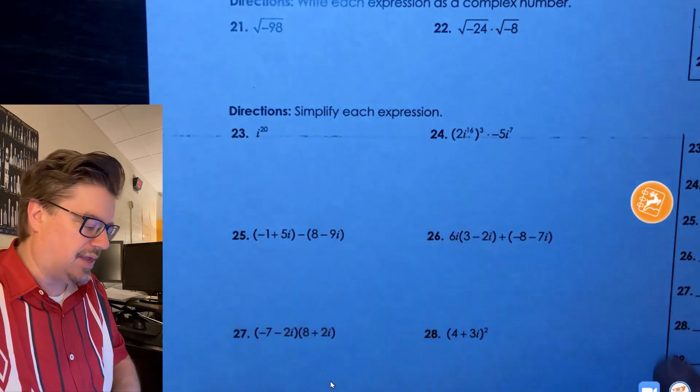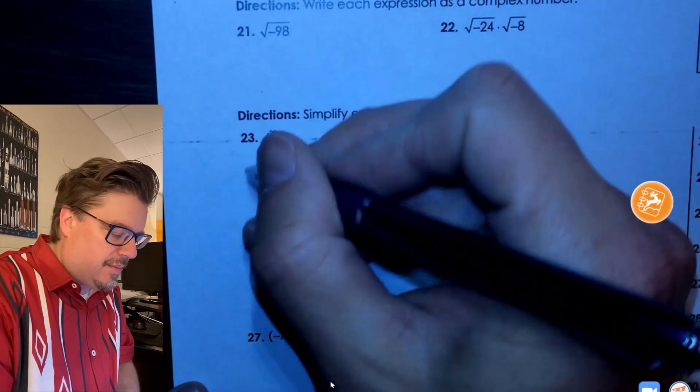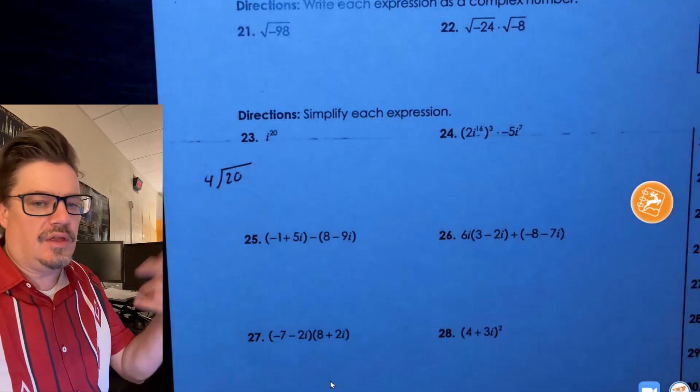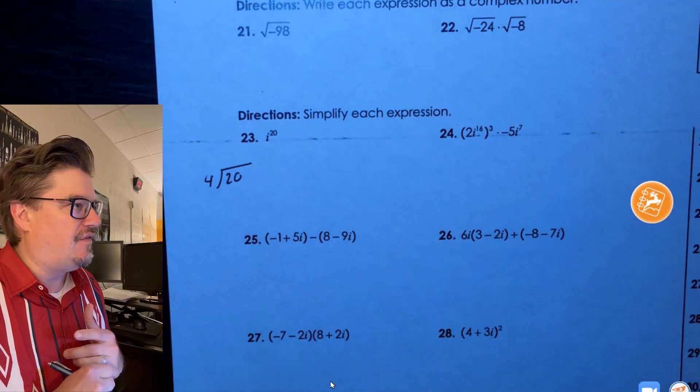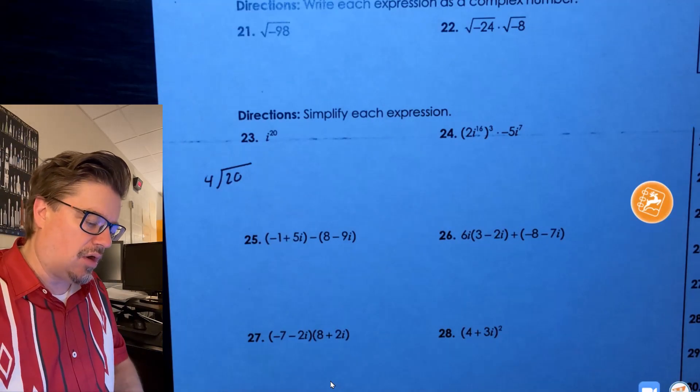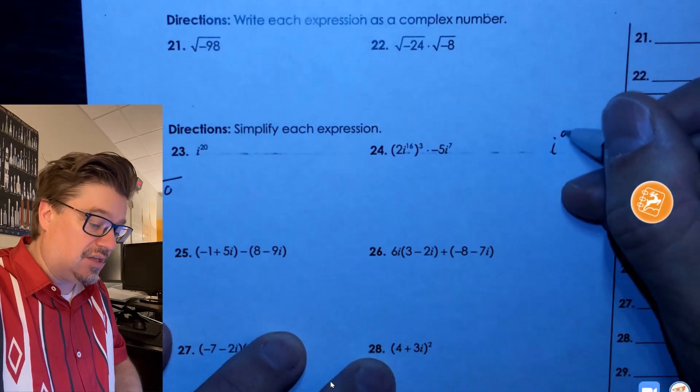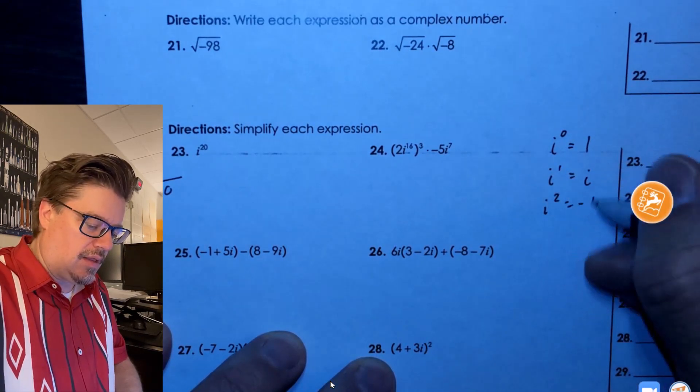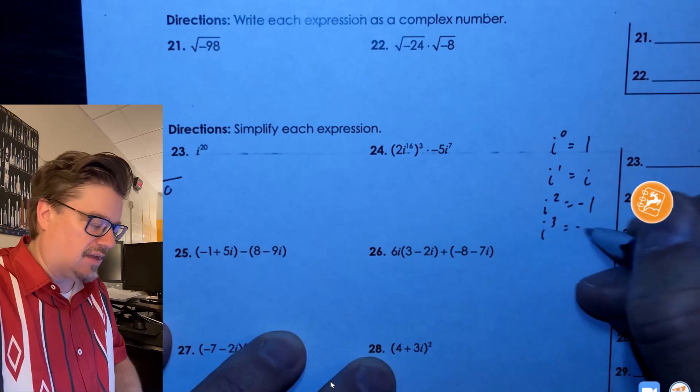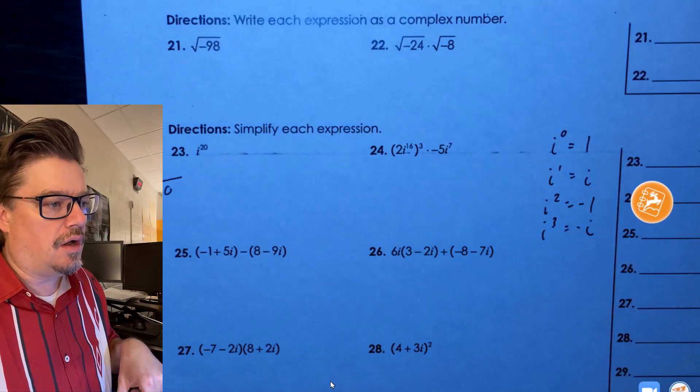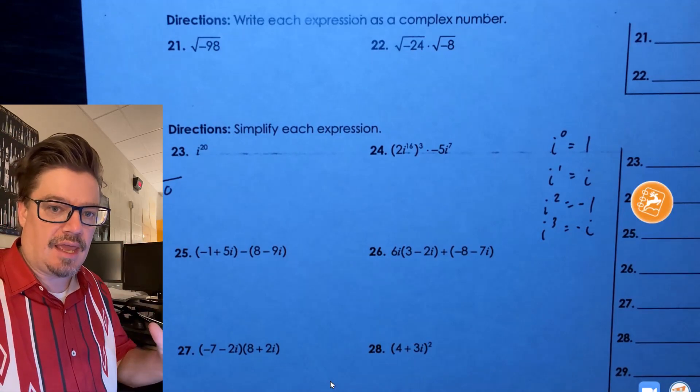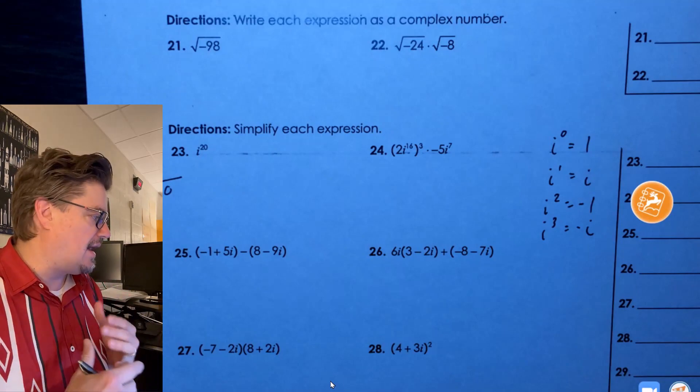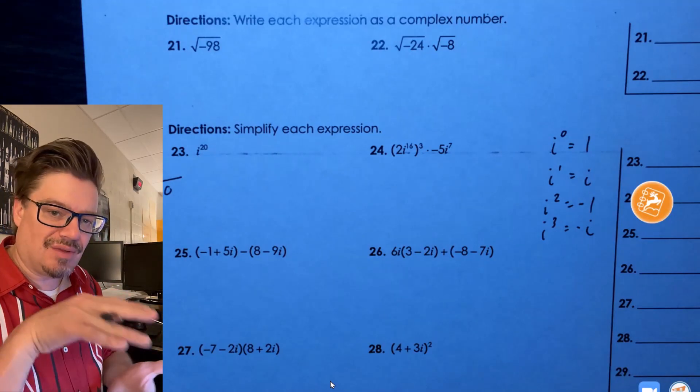We got i to the 20th power. If you remember when you raise i to a power, you want to see what your remainder is when you divide by four, because i runs in cycles of four. If you remember, those cycles work like this - you actually do want to start with zero. Then i to the third is negative i, so it just works like that. If you had a remainder of four, you've done something wrong because you can't - if it's divisible by four, there will be no remainder of four.